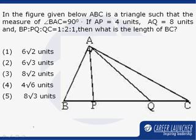In the figure given below, ABC is a triangle such that the measure of angle BAC is 90 degrees, so this angle is 90 degrees. If AP is 4 units, this is 4 units, and AQ is 8 units, so AQ is 8, and BP:PQ:QC is 1:2:1.